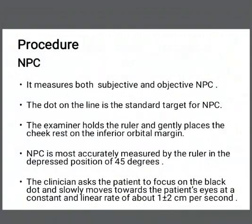Procedure — Near Point of Convergence: The RAF Ruler measures both subjective and objective near point of convergence. The dot on the line is the standard target for measuring near point of convergence. The examiner holds the ruler and gently places the check rest on the inferior orbital margin of the patient. Near point of convergence is accurately measured by the ruler in the depressed position of 45 degrees. The examiner then asks the patient to focus on the black dot and slowly moves it towards the patient's eye at the rate of 1 to 2 centimeters per second.